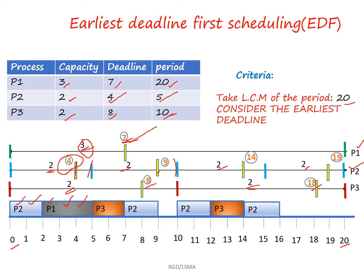After P1's execution is complete, it will not take part in the scheduling process further. Now we check P2 and P3. P3 has deadline 8 and P2 has deadline 9, so P3 has the earliest deadline. P3 must execute 2 units before deadline 8, so we assign P3 two units.